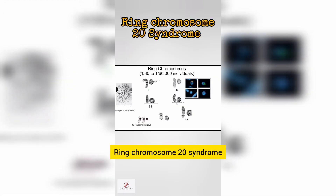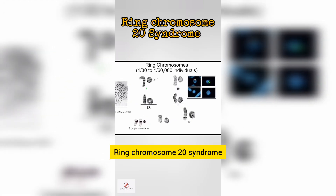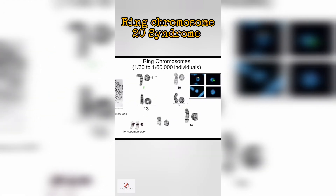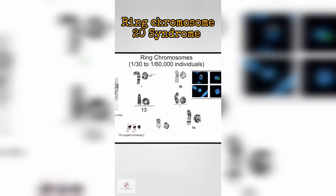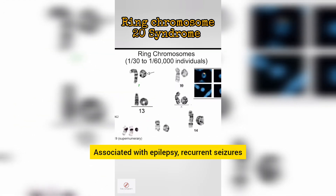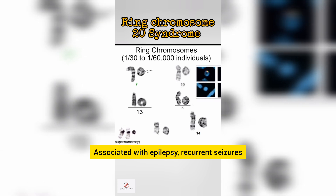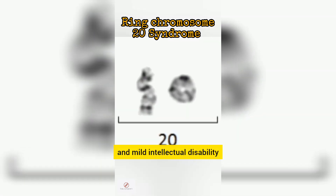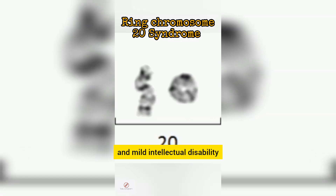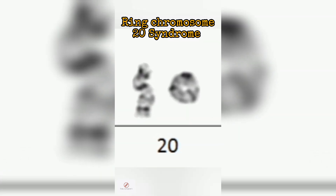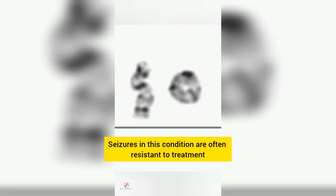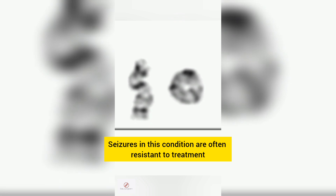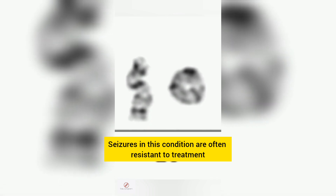Ring chromosome 20 syndrome (R20) is associated with epilepsy, recurrent seizures, and mild intellectual disability. Seizures in this condition are often resistant to treatment.